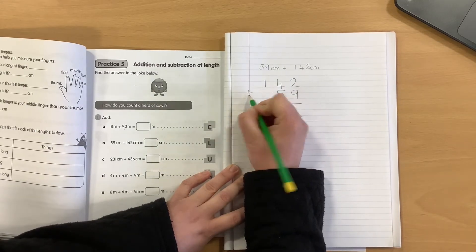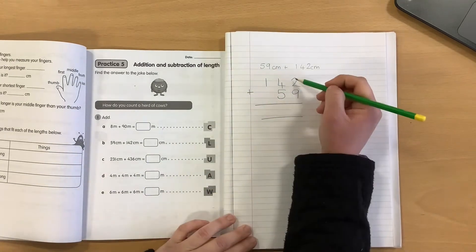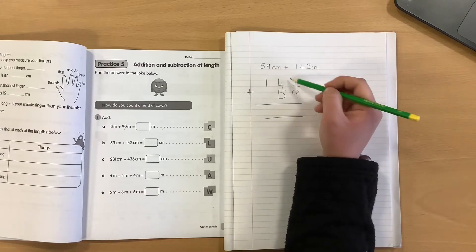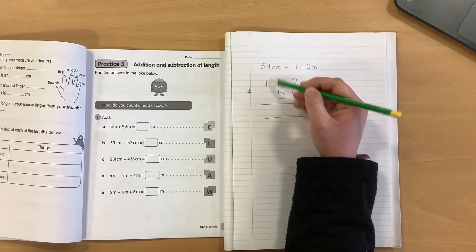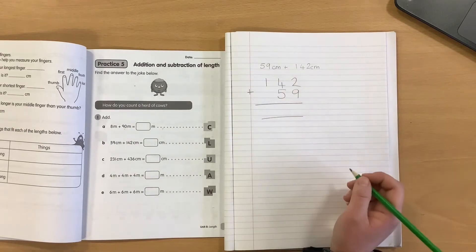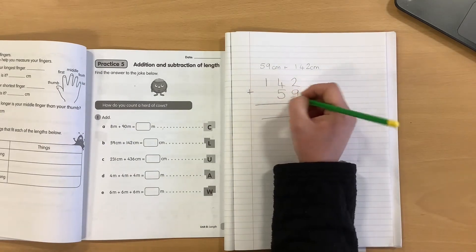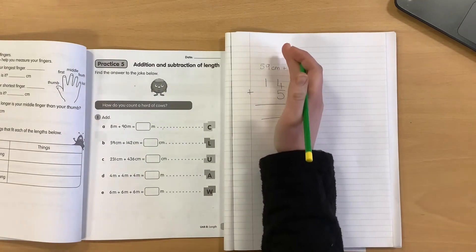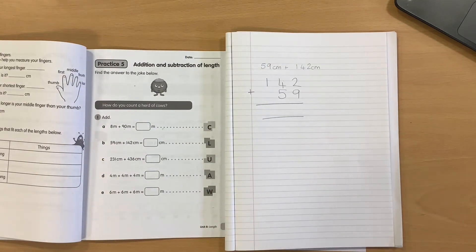Now, as you can see, when I've written it into my column addition, I have made my numbers quite large to make it easier for me, but I've also made it really clear with my columns. Please be careful that when you line your numbers up, you don't line them up so they're in different columns. Make sure the ones are in your ones column, the tens are in your tens, and your hundreds are in your hundreds column.